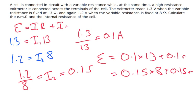So we've now got an equation. So we can say 0.1 times 13 plus 0.1R is equal to 0.15 times 8 plus 0.15R. So let's tidy this up a bit.